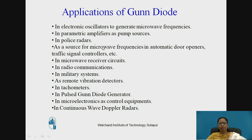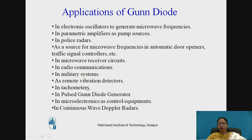Gunn Diodes find numerous applications. They are used in electronic oscillators to generate microwave energy, in parametric amplifiers as pump sources, in police radars, and as a source of microwave frequencies in automatic door openers and traffic signal controllers. They are also used in microwave receiver circuits, radio communications, military systems, remote vibration detectors, tachometers, pulsed Gunn diode generators, microelectronics control equipment, and continuous wave Doppler radar.